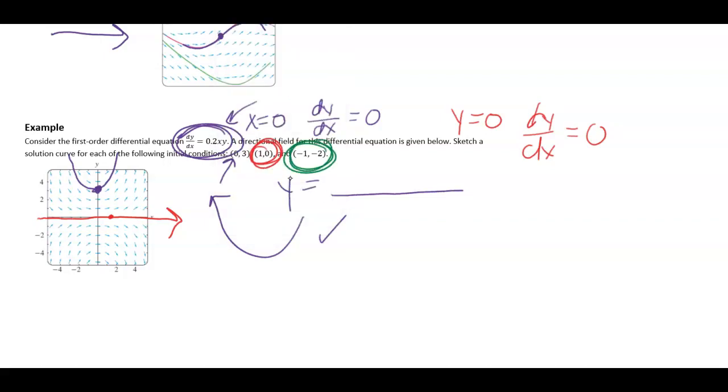All right, last one we'll look at, what if this is my initial condition? All right, negative 1, negative 2. If I just follow the solution curve, I can see that that would be my solution curve if this was my initial condition.